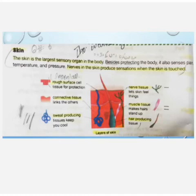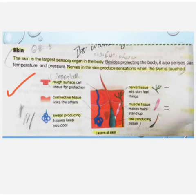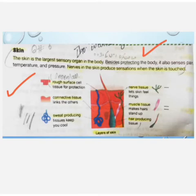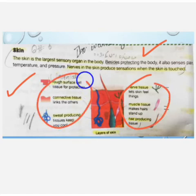We have another sense organ, which is the skin. Skin is a very important and very large sense organ. It protects our body. If we have any pain, we can feel temperature, pressure, and different sensations through layers of the skin.